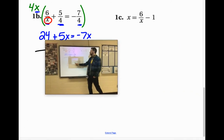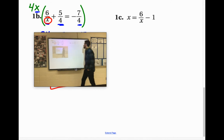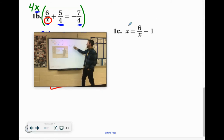All right, let's try out this one. x equals 6 over x minus 1. There's only one denominator, and that's x. So we're just going to multiply everything by x.